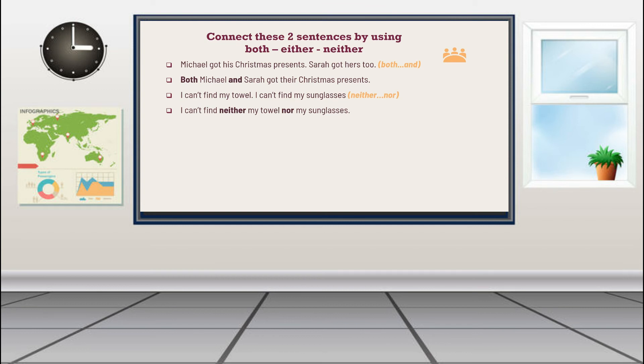The answer is 'I cannot find neither my towel nor my sunglasses.' You put them before the noun. How about this: We can pay cash. We can pay with a credit card. Use one out of two options by using the words either and or.